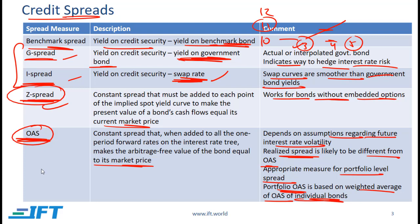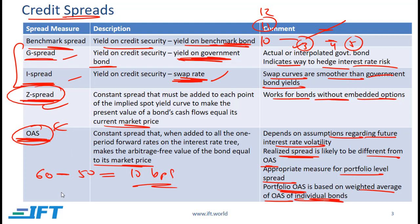From a testability perspective, you need to know the difference between the Z spread and the OAS. For example, if a callable bond has a Z spread of 60 basis points and an OAS of 50 basis points, the difference of 10 basis points is the approximate value of the embedded call option. If the Z spread equals the OAS, that implies the bond has no embedded options.